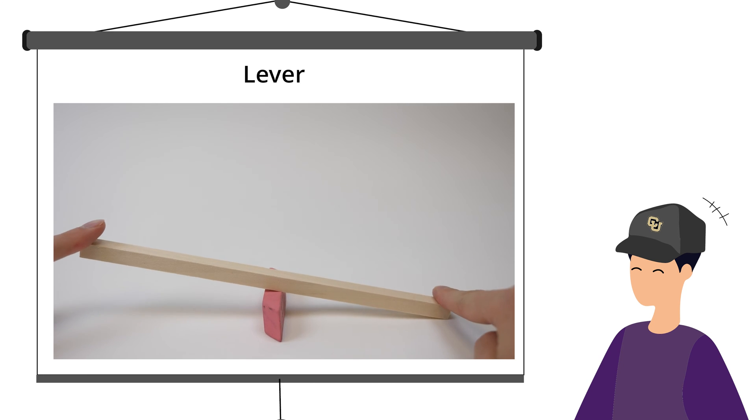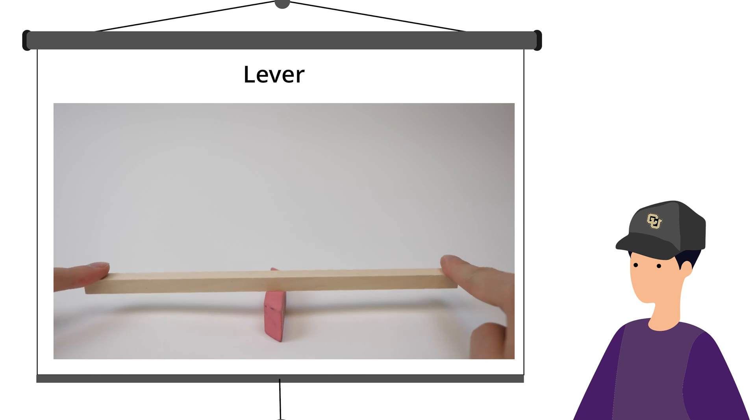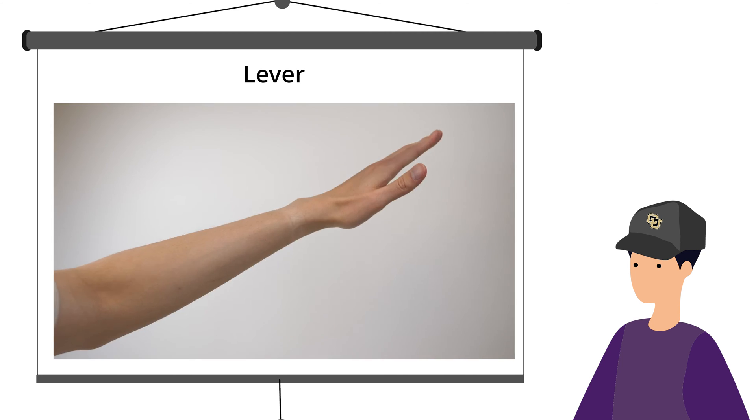Lever. A lever consists of a bar that rotates around a pivot point called the fulcrum. Levers make work easier by applying force over a longer distance. This means that the same work is done with less applied force. Examples of levers are a seesaw and a human arm.